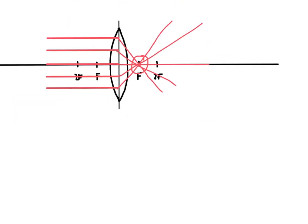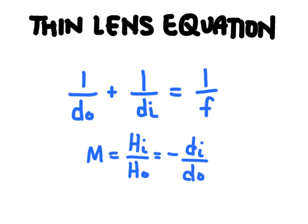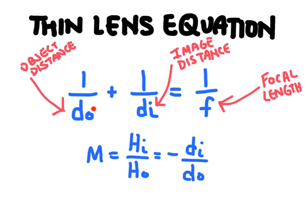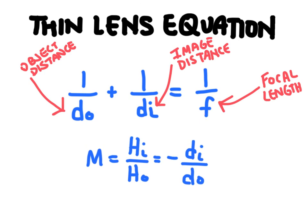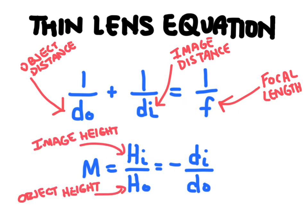The thin lens equation is an equation used to determine the location and size of an image produced with a lens. This symbol represents the object distance — that is how far the object is from the lens. This is the image distance, and then this is called the focal length, which is how far away the focal point is from the lens. The second part of the equation deals with how big the image will be: the image height and the object height, which gives us the magnification.